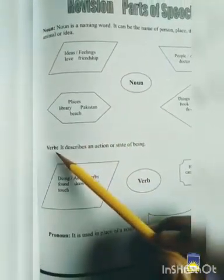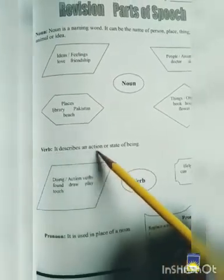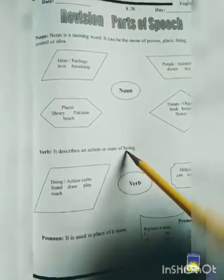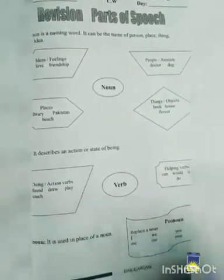Next one is verb. It describes an action or state of being. Verb kya describe kerte hai? Koi bhi action.